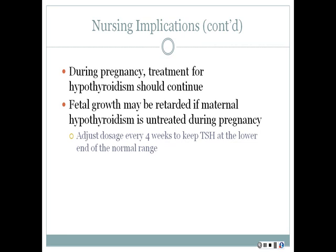During pregnancy, treatment for hypothyroidism should continue. Fetal growth may be retarded if maternal hypothyroidism is untreated during pregnancy. Doses will be adjusted every four weeks to keep TSH at the lower end of the normal range, but treatment should definitely be continued.